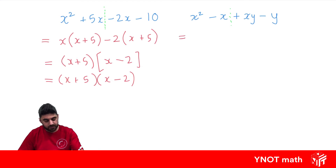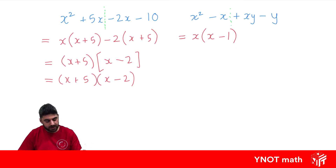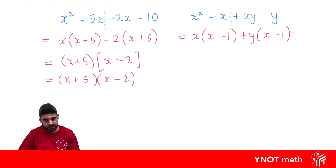A common factor with the first two terms is x. We pull x out of x squared, leaving x, and taking x out of minus x we have minus 1. In the next pair we can take y out because y is in both terms, leaving x, and taking y out of minus y we're left with minus 1. This is great because we're left with a common factor of x minus 1.